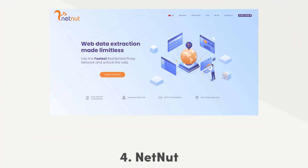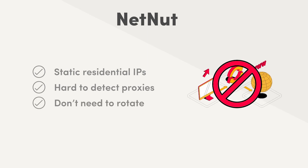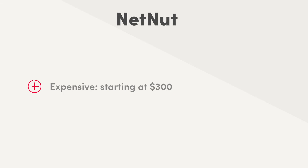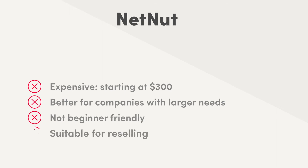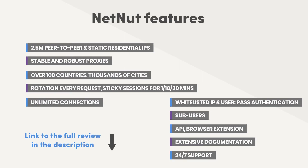The next proxy provider, NetNut, sells static residential IPs — basically data center proxies registered with an internet service provider. They are hard to detect and don't need to rotate, which makes NetNut a good choice for account management. The provider has a dedicated pool of proxies for Instagram, so they should work well. Starting at $300, choosing this provider is quite an investment, and NetNut doesn't hide that it targets companies with large needs. It's also not very beginner-friendly. But if you're serious about Instagram marketing or consider reselling, NetNut is one of the stronger candidates. For more information, you can find the link in the description below.